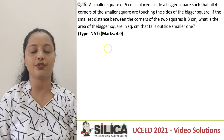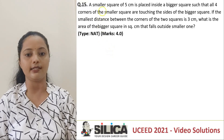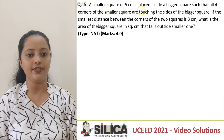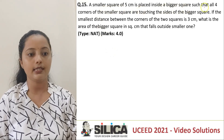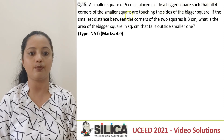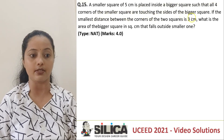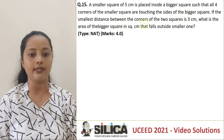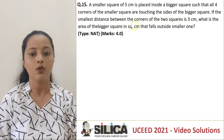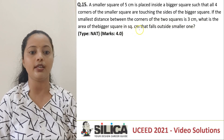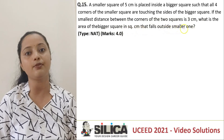Hello everyone. We will now see a question from the UC 2021 paper. A smaller square of 5 cm is placed inside a bigger square such that all 4 corners of the smaller square are touching the sides of the bigger square. If the smallest distance between the corners of the 2 squares is 3, what is the area of the bigger square in square cm that falls outside the smaller one?